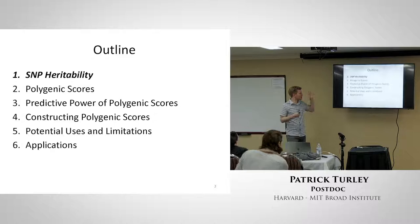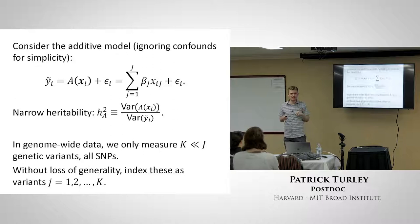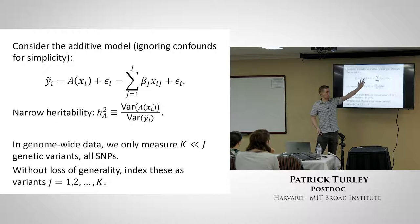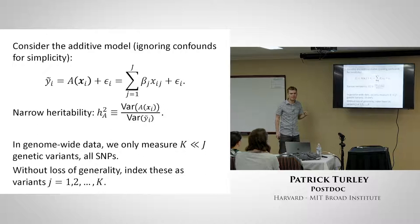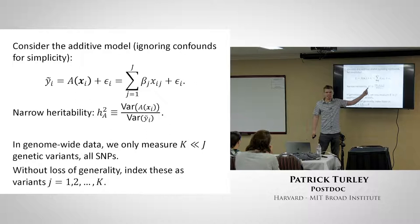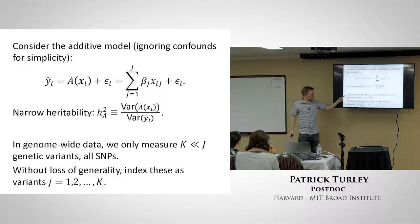I'm going to start by reviewing a concept that Raymond talked about yesterday regarding LD score regression. We have this model we've shown you many times: the phenotype Y has an additive component — a sum of genotypes across every genetic variant, including all SNPs, rare and common, indels, and structural variants — plus everything left over. All of those things put together, the amount they contribute to the phenotype, gives us the narrow-sense heritability.